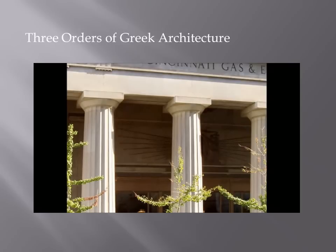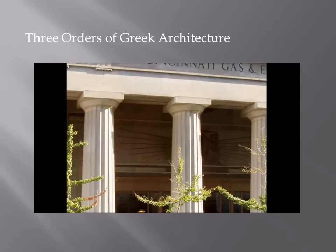The Doric is the simplest of all the orders, typically characterized by a short heavy column with a plain round capital. Doric columns typically don't have a defined base or plinth. The height was traditionally only about four to eight times the diameter of the column — so the columns were typically very squat, very fat and short. The shaft is channeled with 20 flutes, which are those grooves you see in the side of the column.